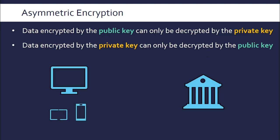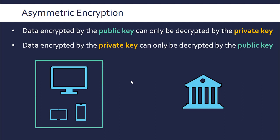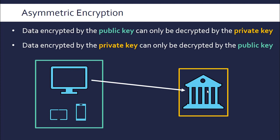A common scenario where encryption is really important is communication with a bank. Several different devices and people want to communicate with the bank, and they all have access to the bank's public key — specific to the bank, produced for all their customers. Customers use this public key to encrypt data, and only the bank has access to its private key. So data encrypted with the public key can only be decrypted by the bank with its private key. On the flip side, if the bank wants to send something back, they encrypt it with their private key and the customer decrypts it with the public key. All communications between the two parties are in ciphertext — encrypted form.